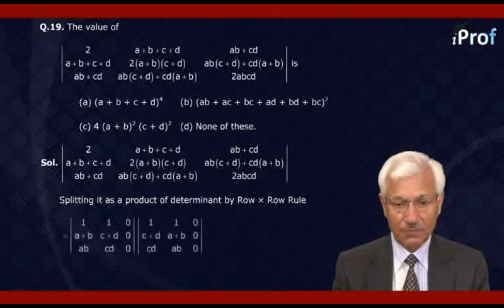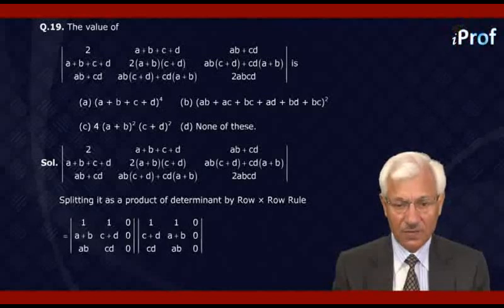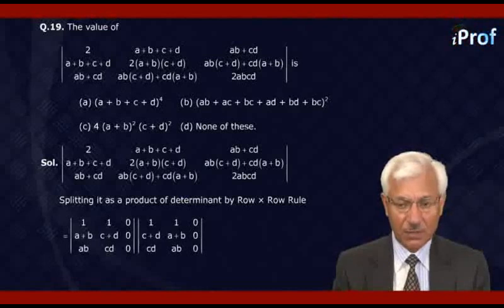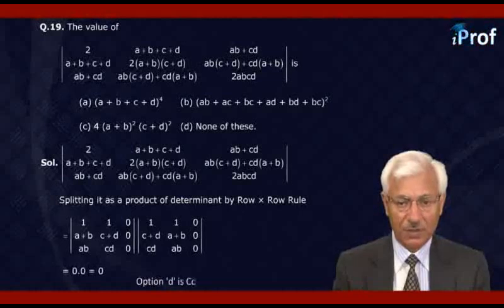The first determinant is |1, 1, 0; A+B, C+D, 0; AB, CD, 0| and the second determinant is |1, 1, 0; C+D, A+B, 0; CD, AB, 0|. It can be verified that the product matches the given determinant. But each determinant vanishes as their last columns are all zeros. Hence the product is 0, and the answer is option D: none of these.